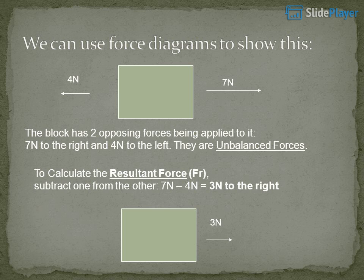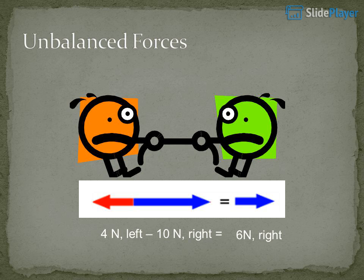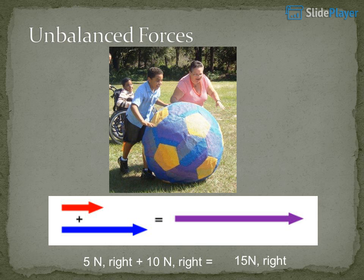A block has two opposing forces applied to it: 7N to the right and 4N to the left — these are unbalanced forces. To calculate the resultant force (Fr), subtract one from the other: 7N − 4N = 3N to the right. Further examples: 3N right and 6N left equals 3N left (unbalanced); 4N left and 10N right equals 6N right (unbalanced); 5N right plus 10N right equals 15N right (unbalanced).